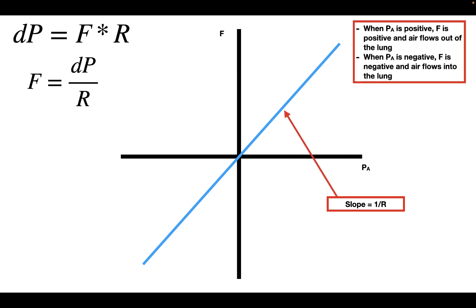From this line, we see a few things. The flow is going to be zero when the alveolar pressure is zero, because the barometric pressure is zero. When the alveolar pressure is equal to the barometric pressure, there is no net airflow into or out of the lung, because there's no difference in pressure. If the alveolar pressure equals the barometric pressure, the difference in pressure is zero, and therefore the flow is zero.